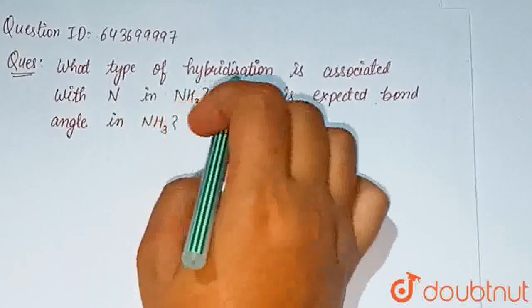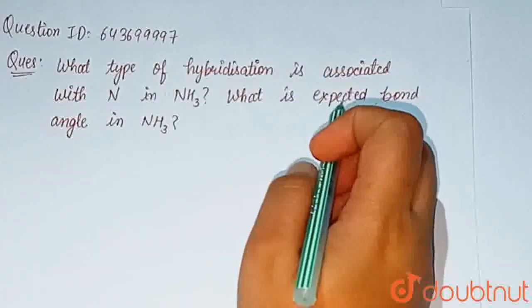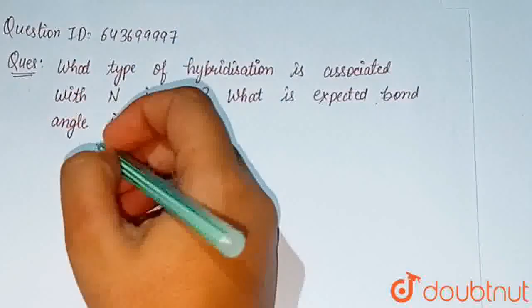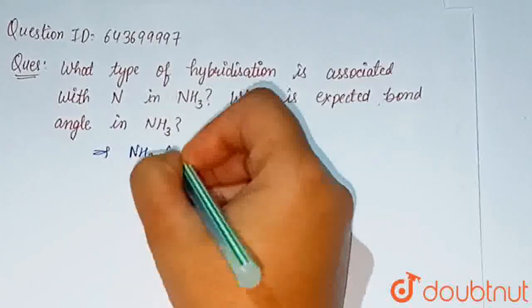The question is what type of hybridization is associated with NH3 and what is expected bond angle in NH3? So as we know that NH3 is ammonia.